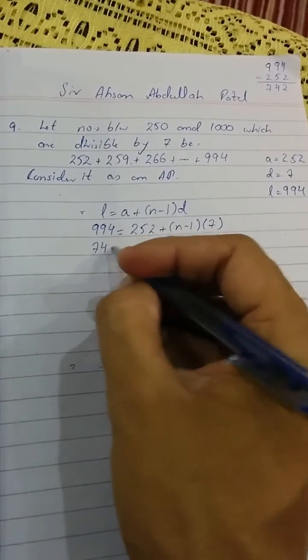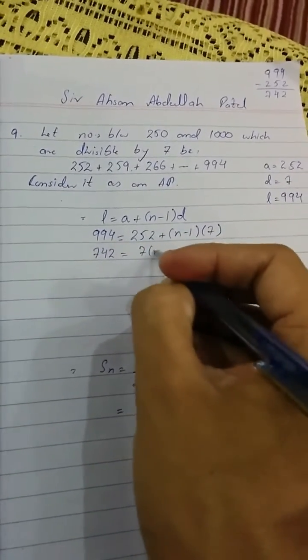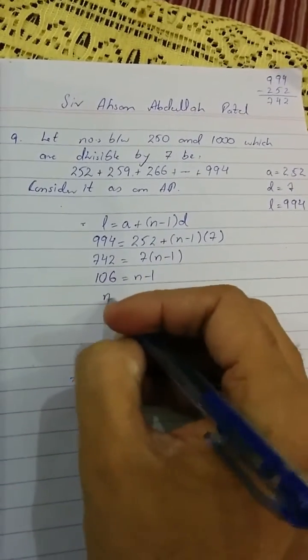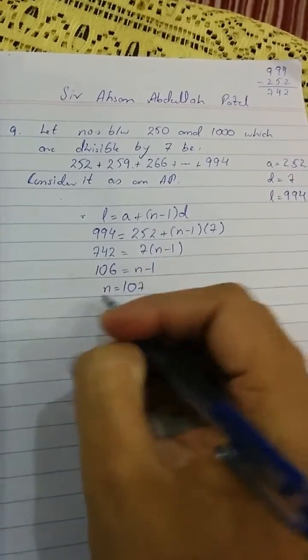This gives us 742. When 7 which is multiplied on that side comes here and divides, we get 106. So n is 107.